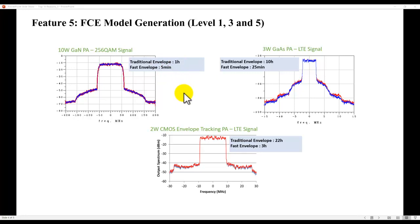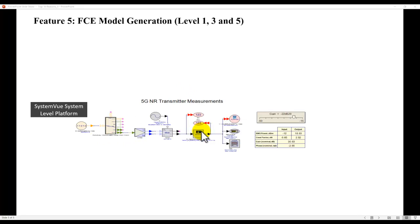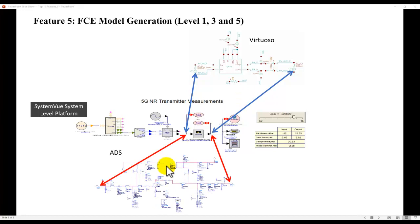Once we extract the FCE model, we can then go to SystemView design environment, which is a system level design platform offered by Keysight. This model can be inserted into 5G, Wi-Fi, radar, or any kind of modulated signal analysis which you may be performing. This FCE model could be extracted either from Cadence Virtuoso design platform using GoldenGate Simulator offered by Keysight, or your favorite design platform such as ADS. Either of these two tools can extract FCE model which can be included inside SystemView.